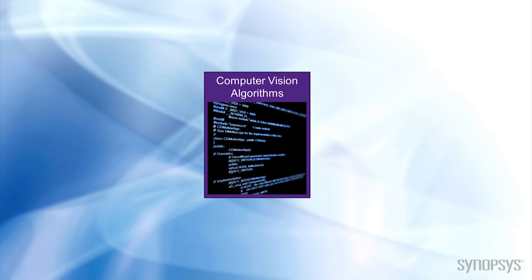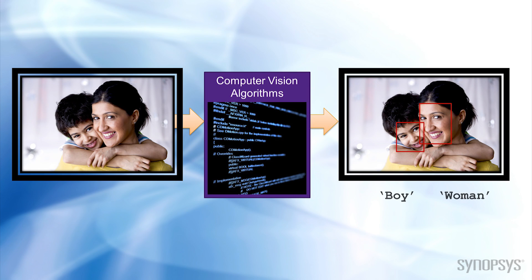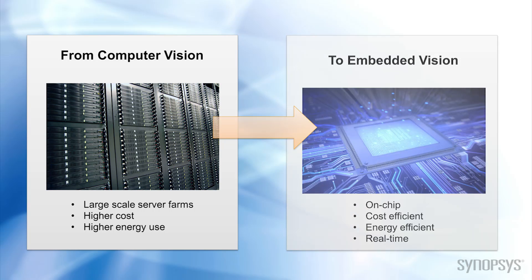Computer vision algorithms have been around for a while. They allow computers to acquire, process, analyze, or gain understanding of digital images or videos. Historically, they have been run on large, power-hungry systems or compute farms. An embedded vision processor is designed to execute vision algorithms on real-time, high-resolution video inputs while minimizing power, area, and silicon cost to support a broader range of applications.